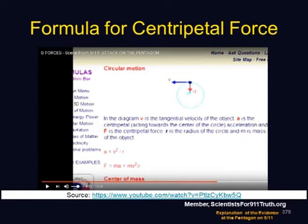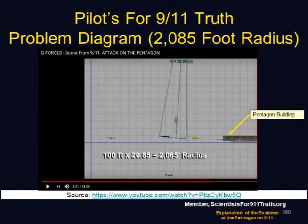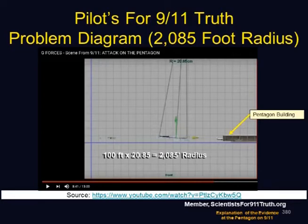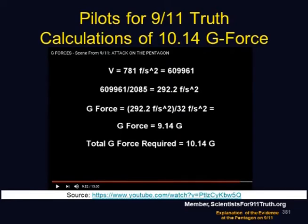The formula they use for centripetal acceleration is pretty standard: A equals V squared over R. The way they set up the problem has the Pentagon on the right, the plane coming in from the left, with an arc radius of 2,085 feet. The plane swings around and comes level to hit the Pentagon. When you do the calculations, the plane is going an estimated 781 feet per second; squaring that, dividing by 285 feet radius, then dividing by 32 feet per second squared gives 9.14 Gs. Adding 1 for Earth's gravity gives the 10.14.